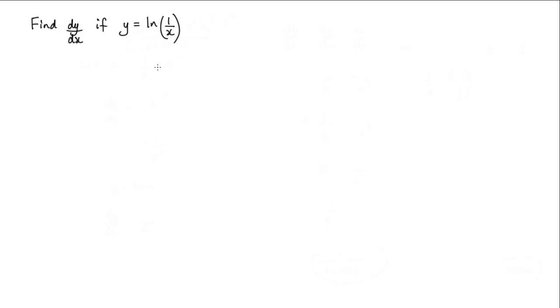Now I'm going to use the chain rule here. So I'll start by saying let u equal 1 over x. And 1 over x, we can actually write that as x to the negative 1.